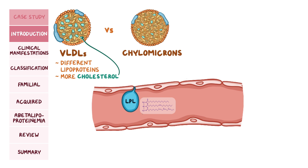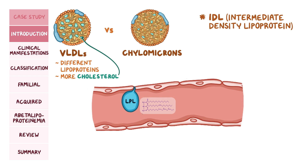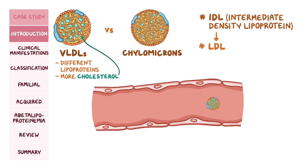As more and more triglycerides leave the VLDL, it becomes an IDL, or intermediate density lipoprotein. And when there's more cholesterol left than triglyceride, it becomes an LDL. LDLs then travel around in the blood, where they are endocytosed by cells with LDL receptors. This can happen when they go back to the liver, or in peripheral tissues that need cholesterol to function.